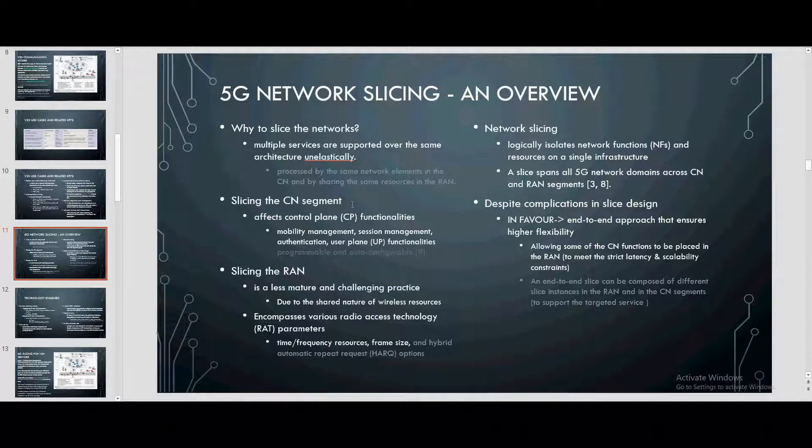5G network slicing overview. There are two sides of the network, and multiple services must be supported over the same architecture. Slicing the CN segment involves basic control-plane functionality like session management, mobility management, or subscription management, and user-plane functionality. Slicing the RAN is a more challenging task due to the challenges of wireless resources.